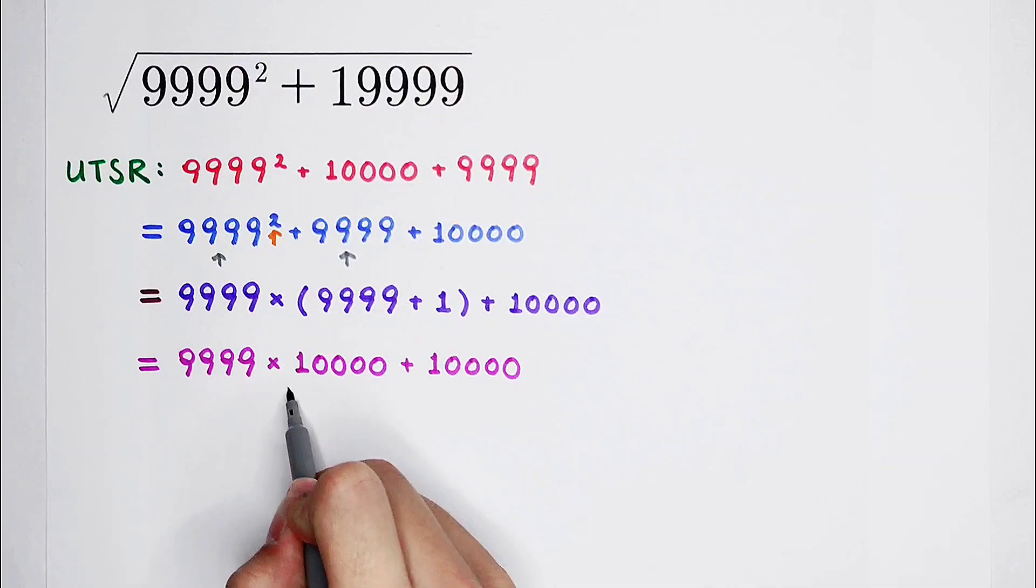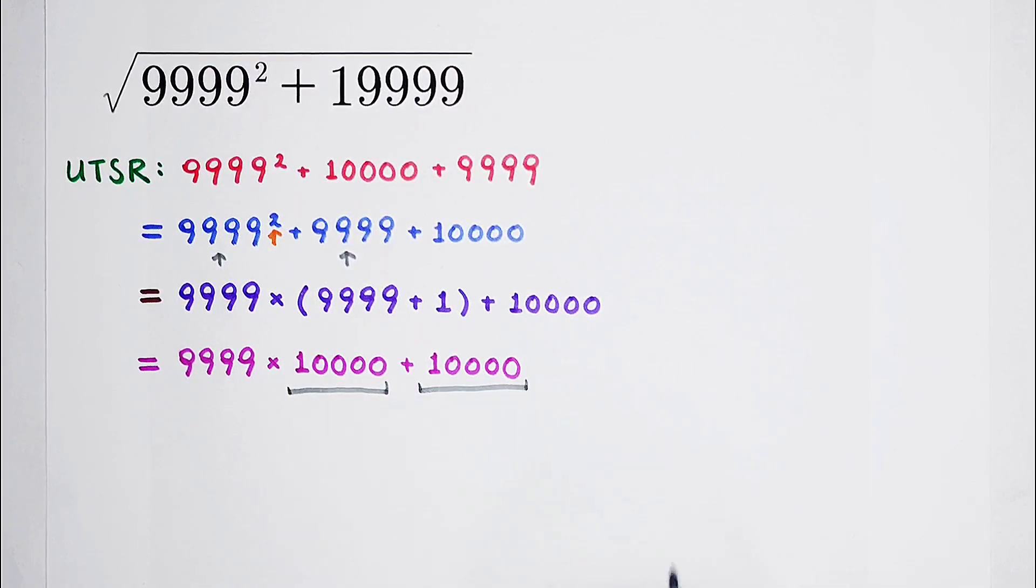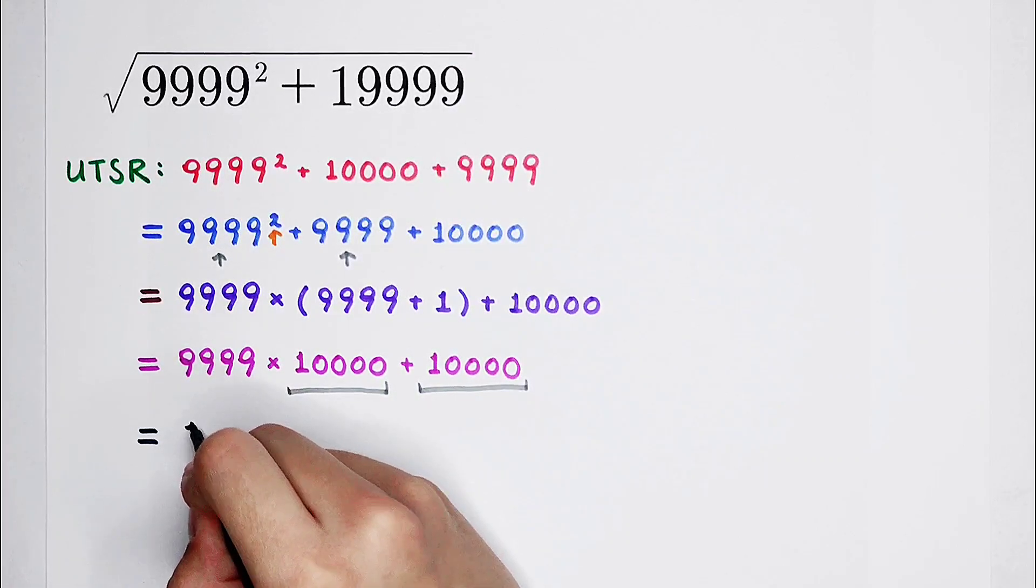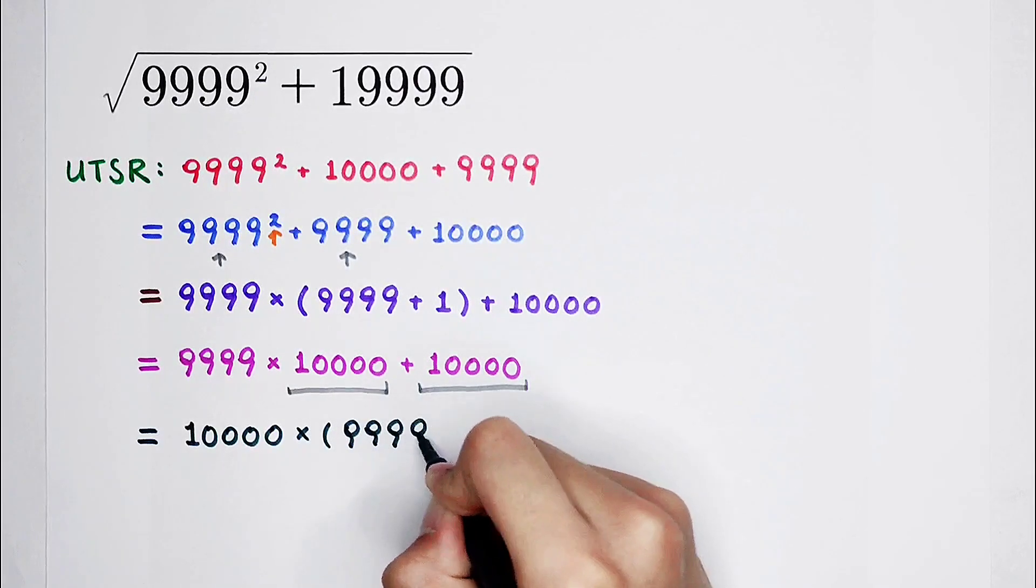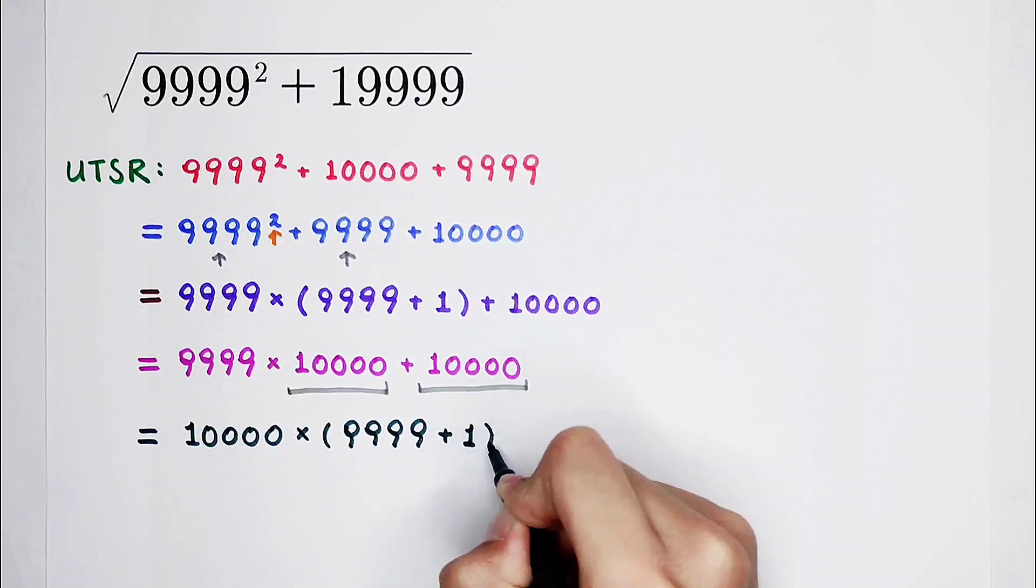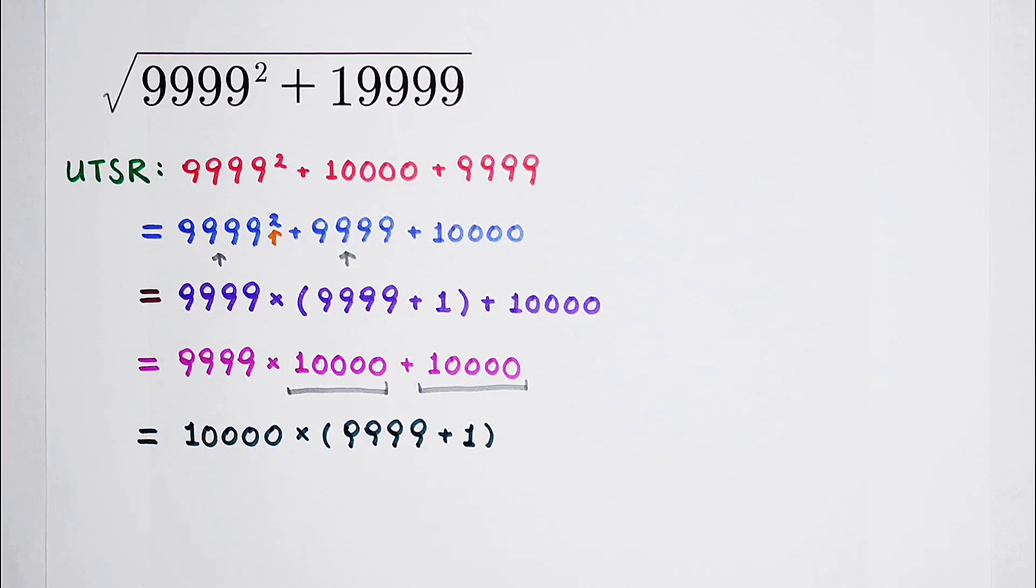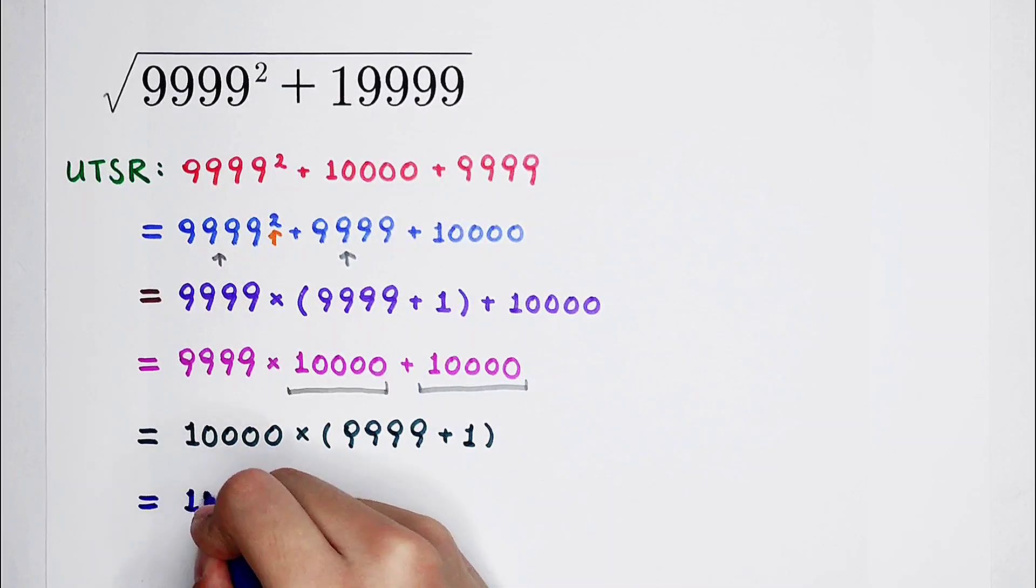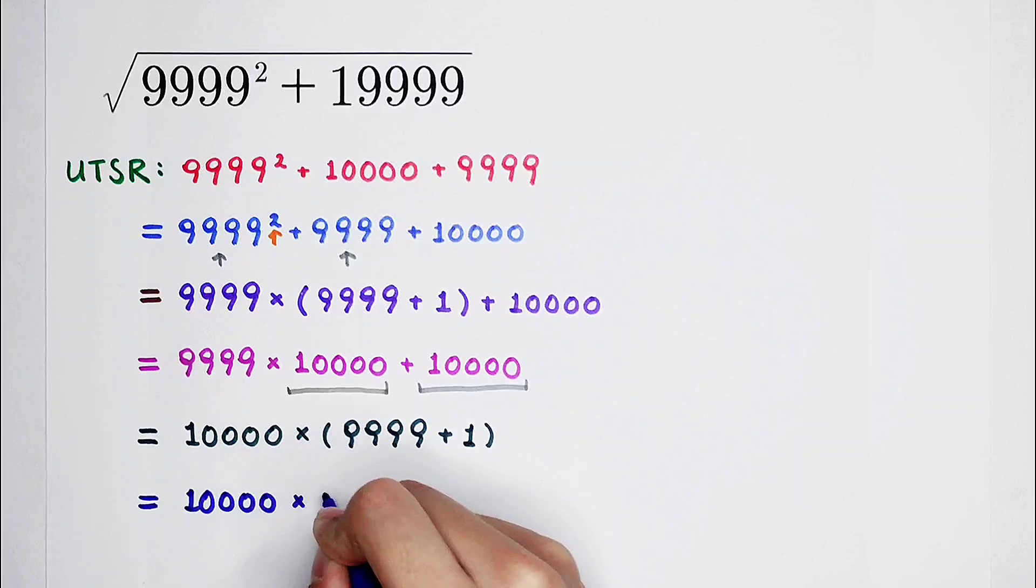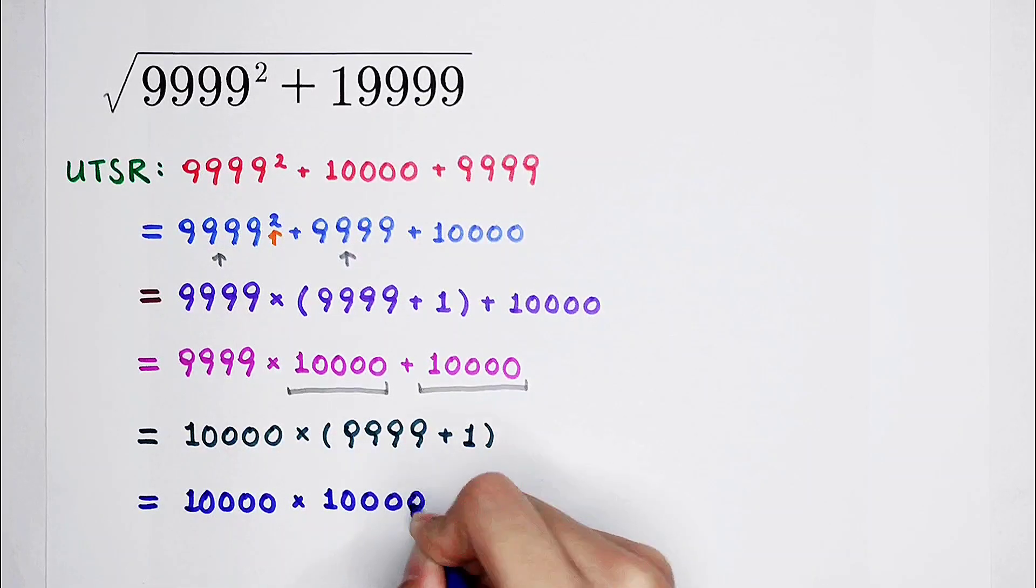Now, 10000 appears twice. So what should we do? Of course, we can take it out. In the bracket, it is 9999 and then plus 1. Then, what's the thing in the bracket? It is 10000. 10000 times 10000.